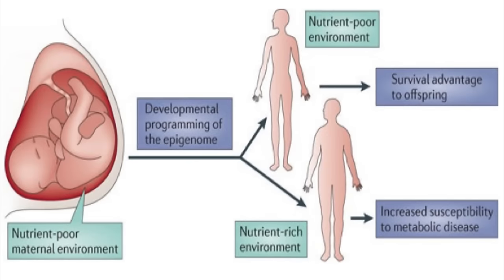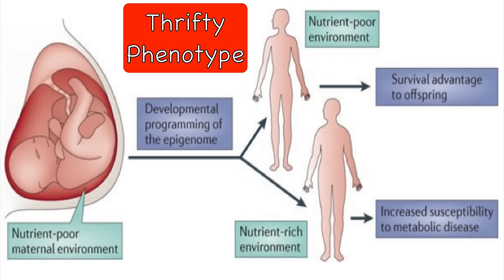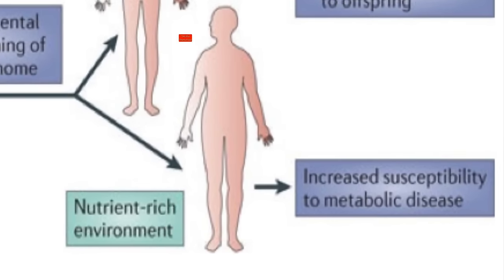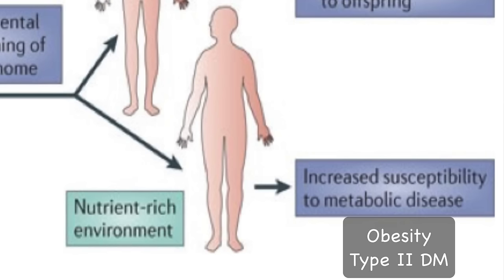Before I end, I want to talk about the thrifty phenotype hypothesis. Plasticity of the epigenome during development affords the developing organism an opportunity to pre-adapt to the future adult environment, which provides a survival advantage. However, in settings where the fetal environment does not match the adult environment — for example, when a growth-restricted fetus grows in a nutrient-rich adult environment — the resulting catch-up growth and disconnection between fetal programming and the adult environment can predispose the adult to metabolic disease, including obesity and type 2 diabetes.